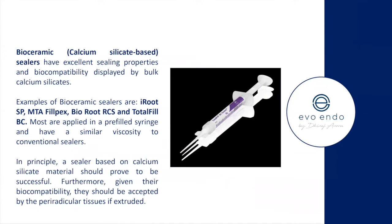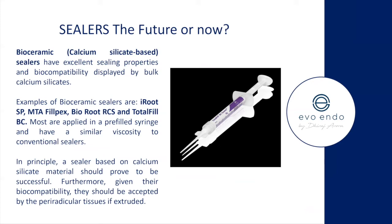I now use TotalFill bioceramic sealer — high flow variety — because the high flow is the only bioceramic sealer that can be used with both cold and warm condensation, so I can use it for all my cases. Other examples include Iru, MTA Fillapex, BioRoot RCF, and two-Saver — all great materials. They're becoming more commonly used because of excellent sealing properties and extreme biocompatibility. In principle, any sealer based on calcium silicate should prove successful.